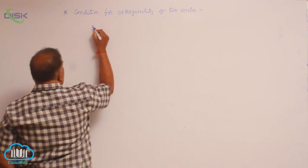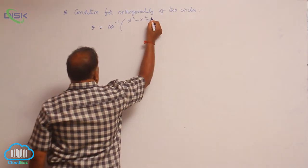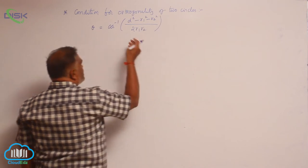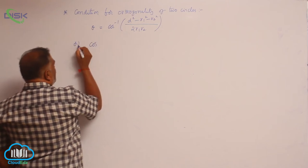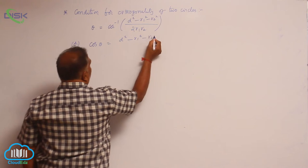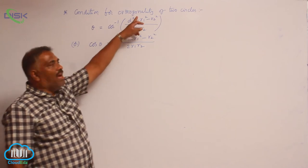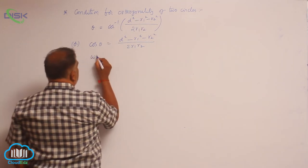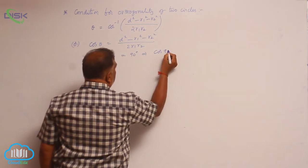Let us consider theta equal to cos inverse of (d squared minus r1 squared minus r2 squared) divided by 2 r1 r2. We discussed this theorem earlier. So cos theta is equal to (d squared minus r1 squared minus r2 squared) divided by 2 r1 r2. Particularly, when the angle between the two circles is a right angle, that is when theta equals 90 degrees, cos 90 is 0.